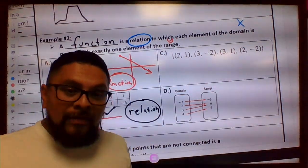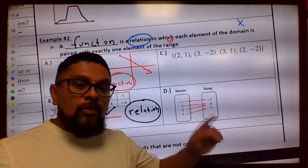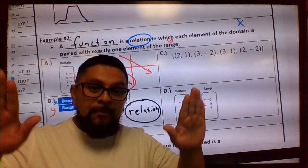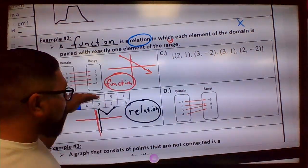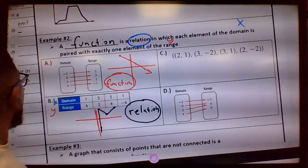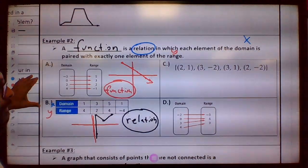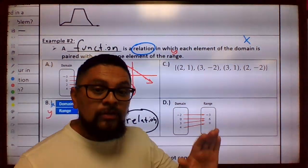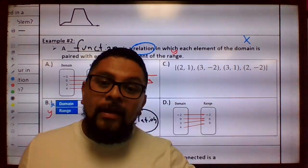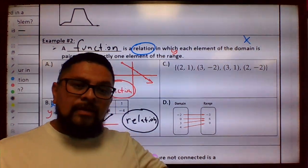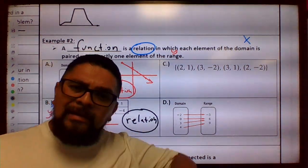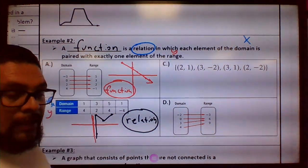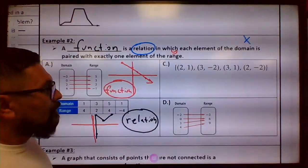Hi guys, this is Mr. G. We're on 1.7 example 2 C and D, the front page. We already did A and B, and now we're going to go on to C. What we're figuring out here is if it's a function or if it's a relation. We found those two already: this one is a function and this one is a relation. Now let's go on to C.